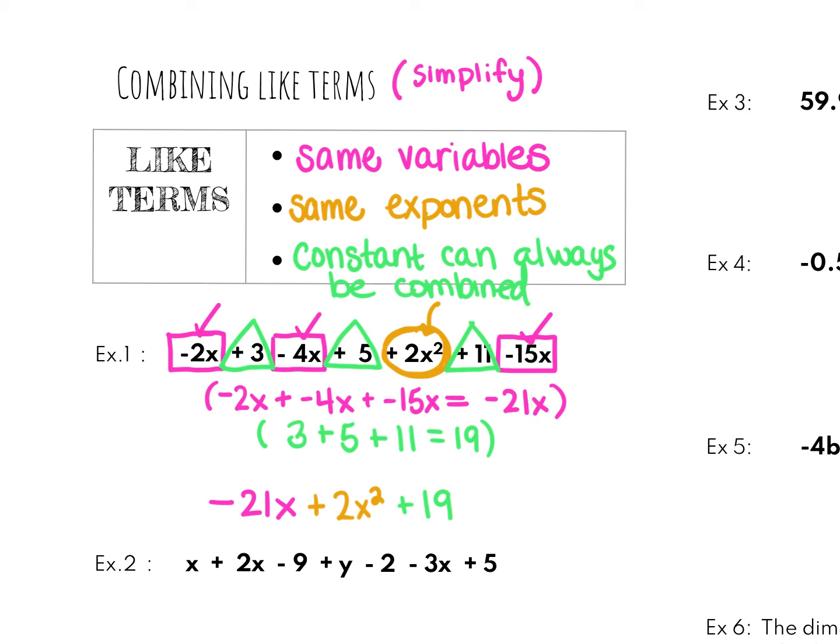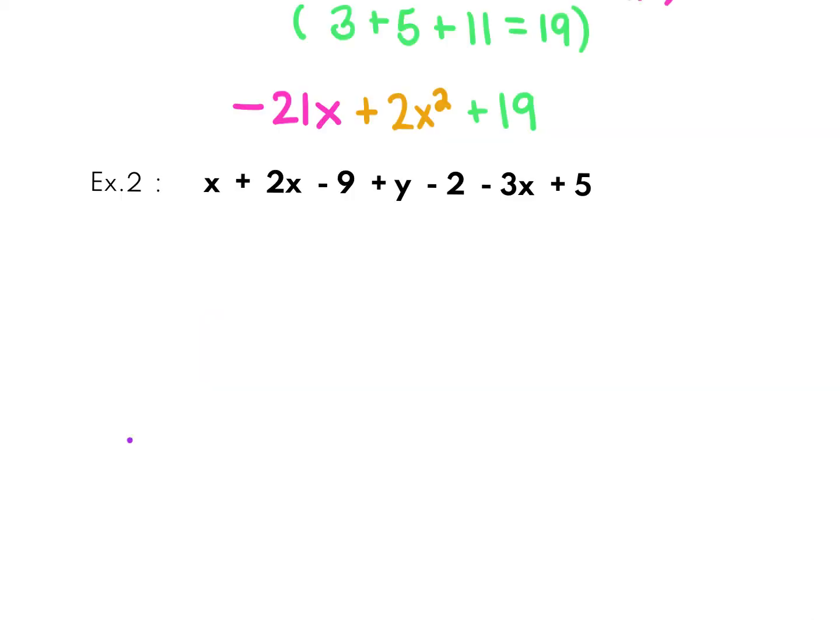So let's try example number two. I am going to start with my x and I am going to put a box around my x. Your first term, if it's positive, it's not going to show that it's positive. This is also going to be one. My coefficient here is one. Now I'm going to find everything else that has the variable of x. So right next door I have my positive 2x and then I have my negative 3x. I am going to combine them together. So I have my positive 1x plus my 2x plus my negative 3x. That is going to simplify to zero x's. So I can cancel those out and I have nothing that I need to write down.